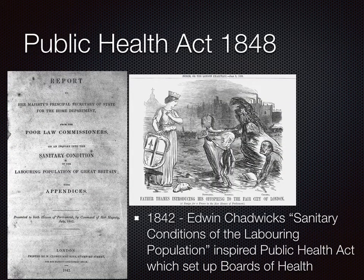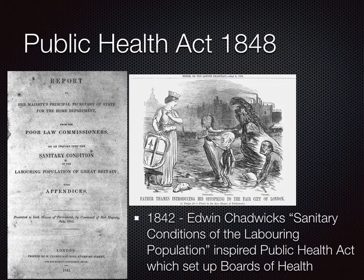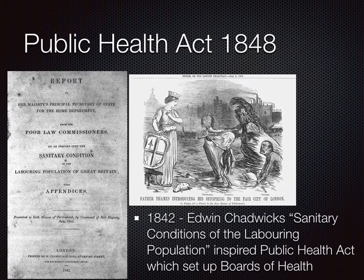The government was forced to take further action to improve conditions after Edwin Chadwick published The Sanitary Conditions of the Labouring Population in 1842. This report showed how horrific living conditions were, and the government passed the Public Health Act in 1848. Further health acts would follow, but the first big one was in 1848, and with this they set up boards of health to try to improve public health.